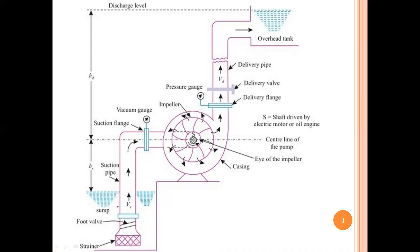Important terms in centrifugal pump: suction head is the vertical height from the center of your pump — the eye of the impeller — to the water surface in the below tank. This is my delivery pipe, and the distance from the center line of the pump to the water level in the overhead tank is called your delivery head. Both are vertical distances. You also have a suction flange and delivery flange to connect pipes, but the important parts are impeller, casing, delivery pipe, and suction pipe.